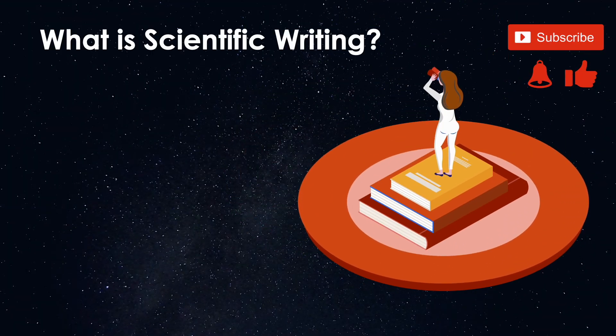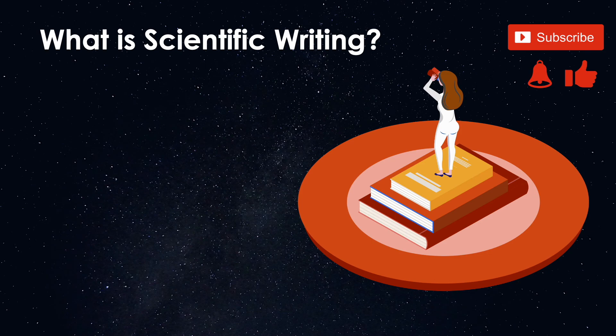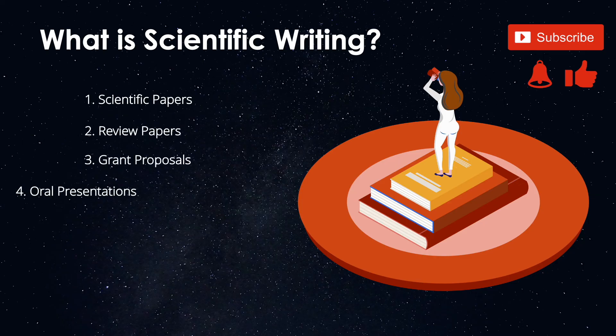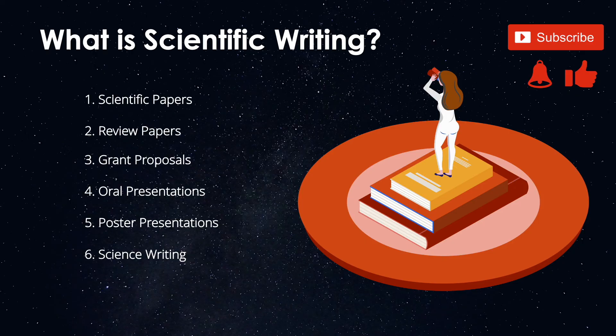So what is scientific writing? Scientific writing is conventionally thought of as the reporting of original research in journals through scientific papers. But scientific writing can cover a much broader range, including review papers, grant proposals, oral presentations, poster presentations, and science writing.